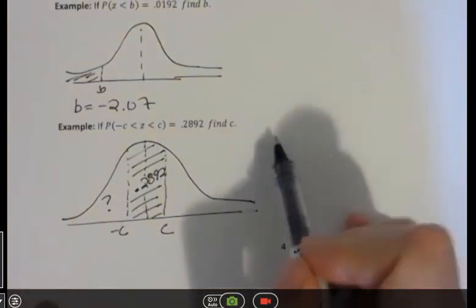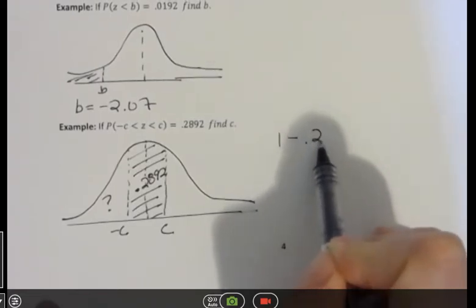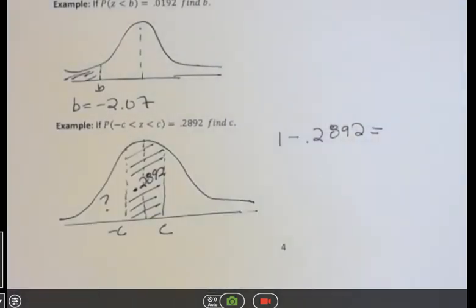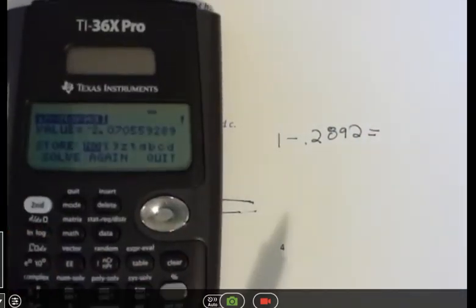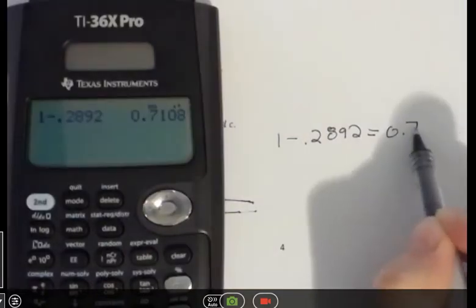So what I'm going to do is take the area that I was given, and I'm going to subtract that from 1. So I'm going to take 100% of my area, and I'm going to subtract the part that I'm actually interested in. So that is 1 minus 0.2892, and that equals 0.7108.